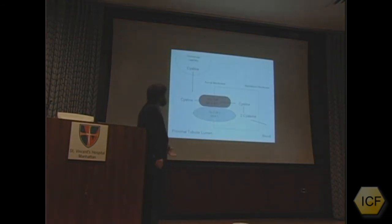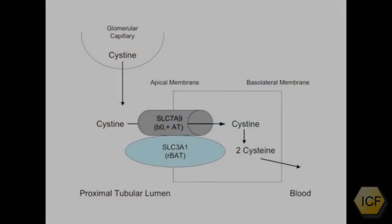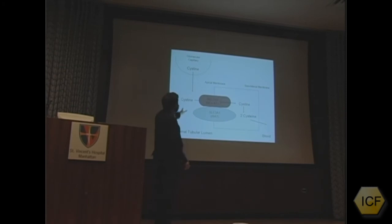Here's my simplified drawing, and this basically gives you an idea of what's actually happening in those proximal tubule cells. As the cystine is filtered, it has to move across the membrane.